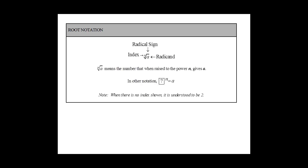Root notation. The radical sign is over the radicand. The index is the number outside of the radical sign. The nth root of a means the number that when raised to the power n gives a.